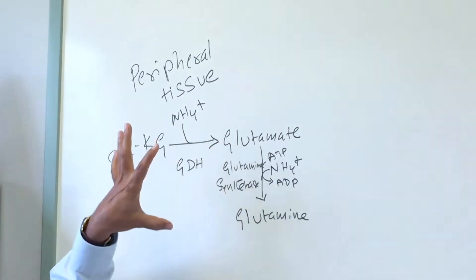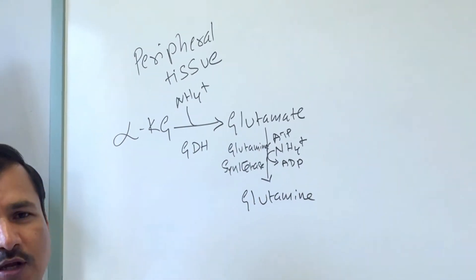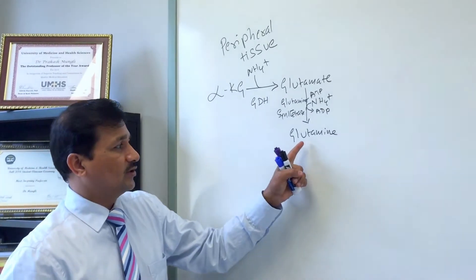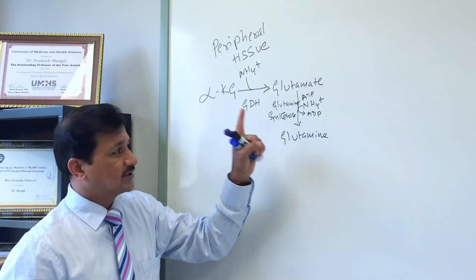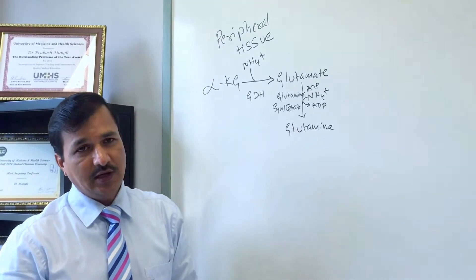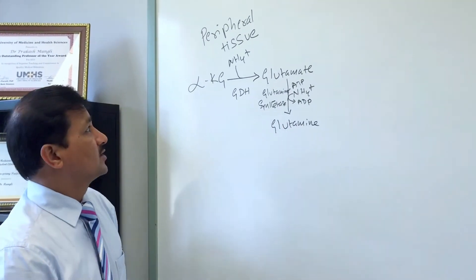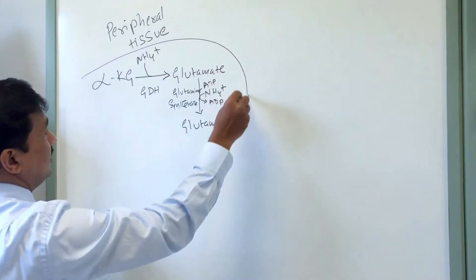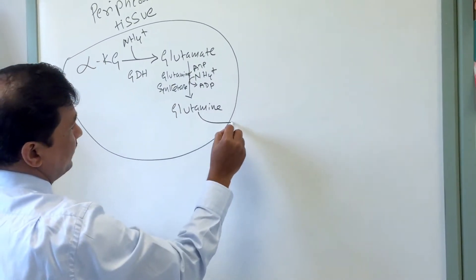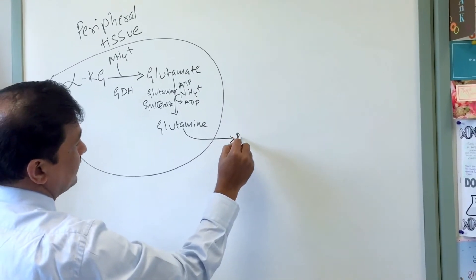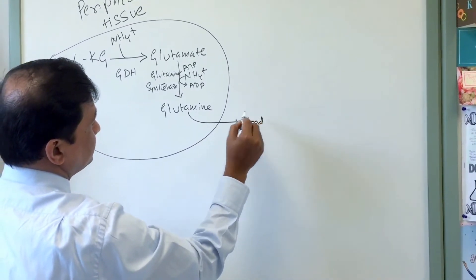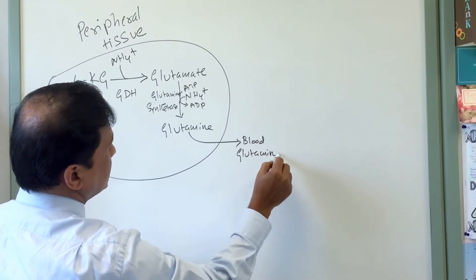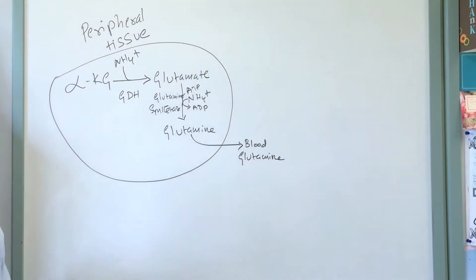This is how ammonium ion produced in the peripheral tissue is handled. We consume alpha-ketoglutarate and produce glutamine. Glutamine is then secreted from the peripheral tissue into the blood, and it will be taken up by three tissues.